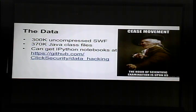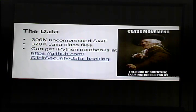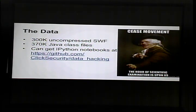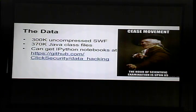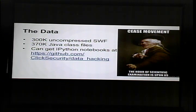The data we have is about 300,000 uncompressed SWF files and 370,000 Java class files. You can get the iPython notebooks from our data-hacking repo on GitHub at Click Security, where we put all of our various notebooks from different presentations. You can get the data, play with it, and contact us if you think we could do something better or if you think we did something wrong. I by no means think this is the end-all be-all, but it's a good way to go about doing things.